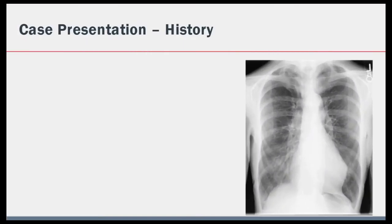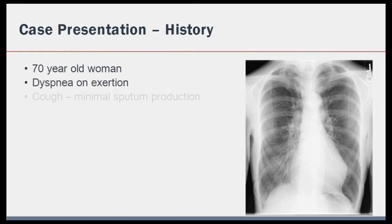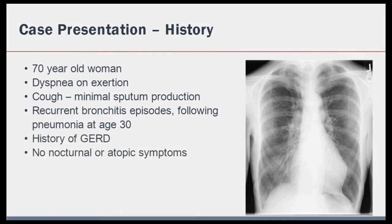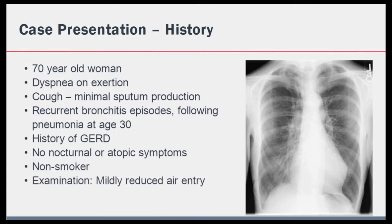We will begin with a case history. A 70-year-old woman presented to the pulmonary clinic. She had a five-year history of increasing dyspnea on exertion associated with a cough which was occasionally productive. She had an episode of pneumonia at age 30 and experienced recurrent episodes of bronchitis ever since. She had no nocturnal, atopic or asthma-like symptoms. She was a never smoker and had a history of mild gastroesophageal reflux. Her examination was unremarkable apart from minimally reduced air entry in the bases and her chest x-ray was essentially normal.